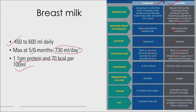In terms of thickness, colostrum is thicker than breast milk. Colostrum is smaller in volume; breast milk is larger. Colostrum contains less sugar and less fat compared to breast milk.